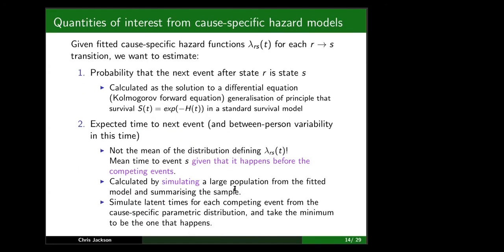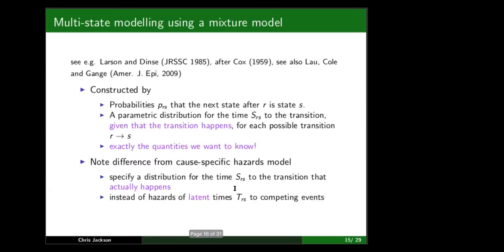Now I'll contrast that with the alternative framework based on mixture modelling. It's slightly obscure — the reference is Larson and Dinse in JRSS-C in the 1980s, which described the model in full generality, though it goes back to David Cox's work on competing exponential distributions in the 1950s. The reason this framework is nice is that it gives directly the quantities policy makers want to know.